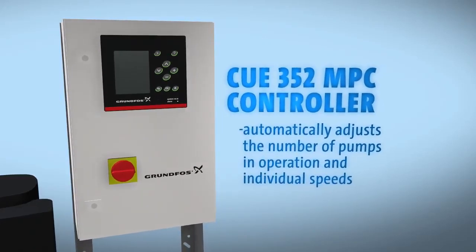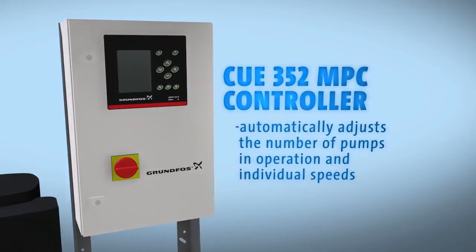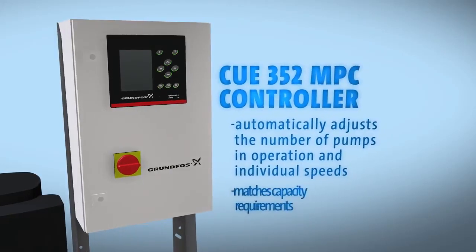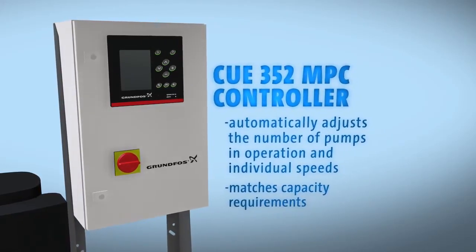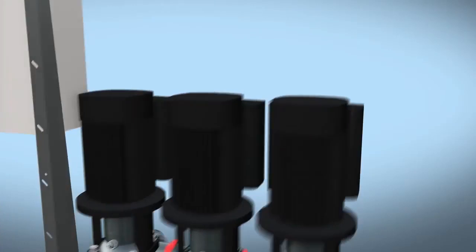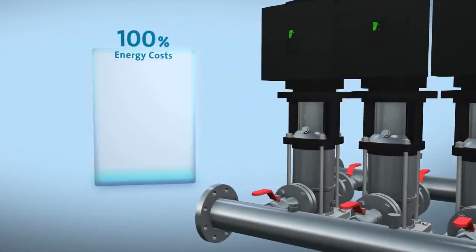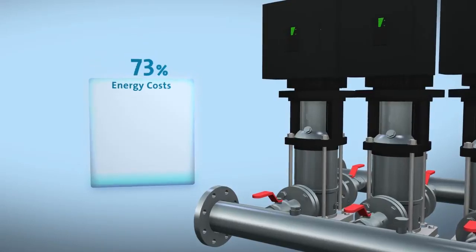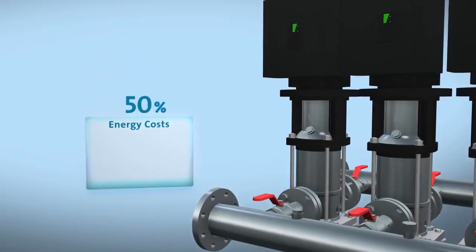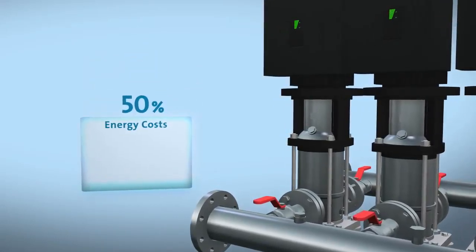which automatically adjusts the number of pumps in operation, as well as their individual speeds, to match the specific capacity requirements of your building. This ultra-efficient cascade control capability will slash energy costs by 50% when compared to a like-size constant speed system. That's money back in your budget.